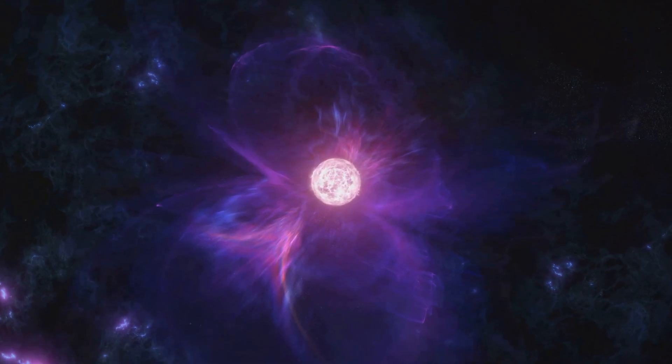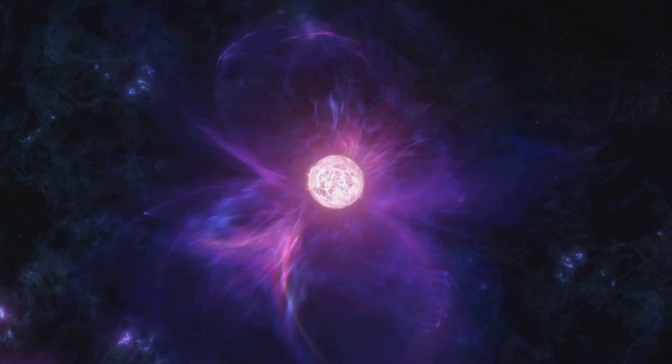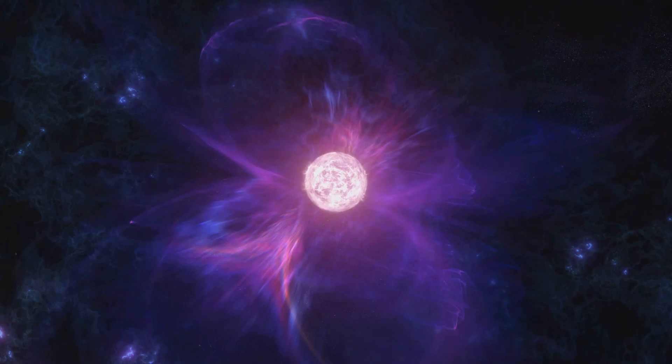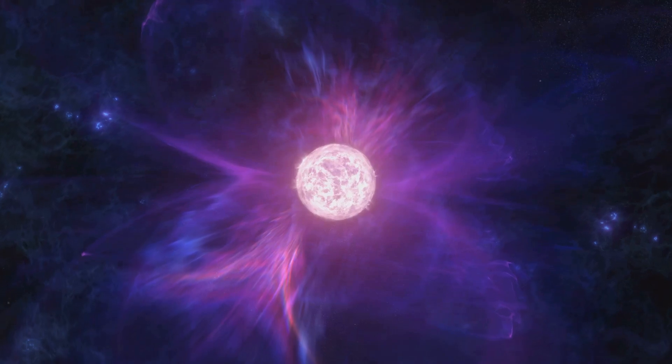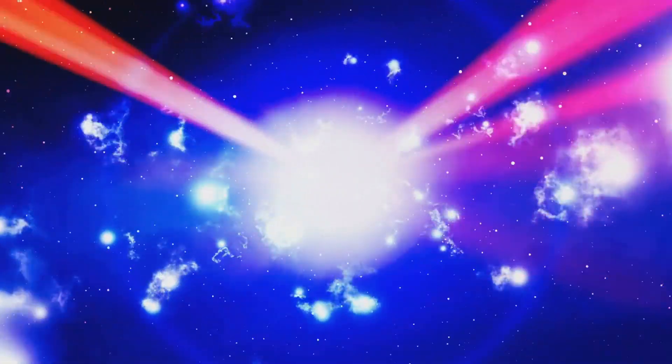Continuing further, we traverse ultraviolet light and X-rays, until we reach the opposite end of this ocean, where the waves are tiny, yet incredibly powerful. Here, in this tumultuous sea, we find gamma rays.